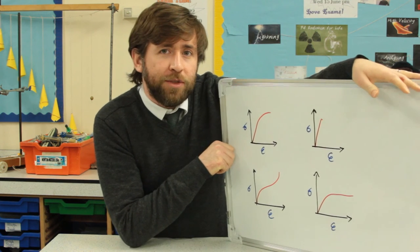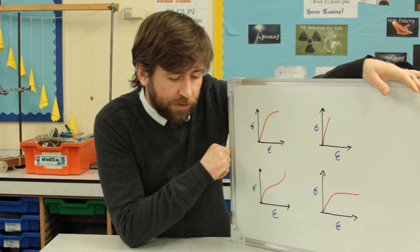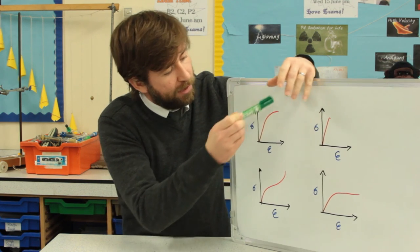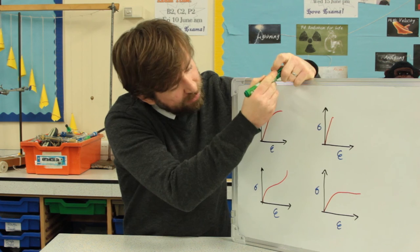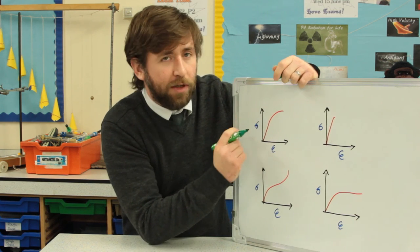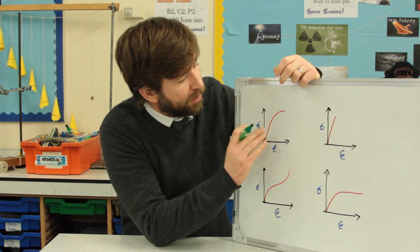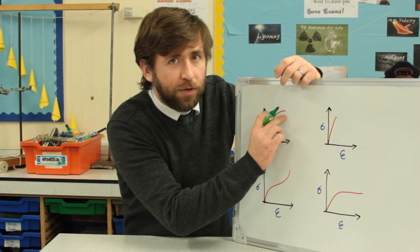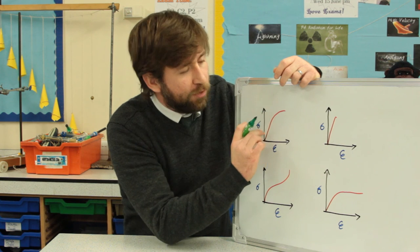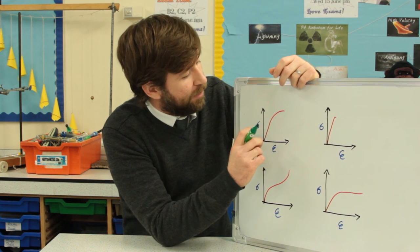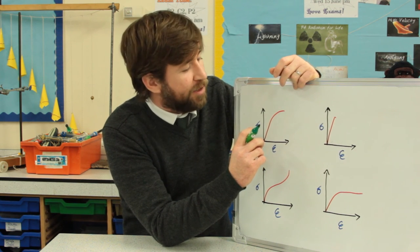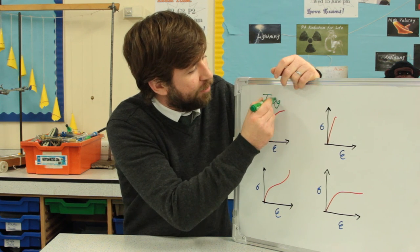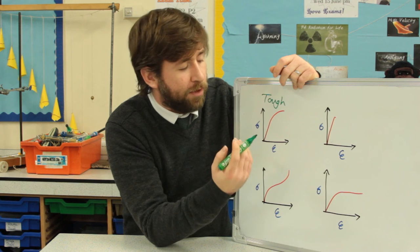So I promised you some graphs and how they're linked to different material properties then. This first one I've drawn is a material which is quite stiff. You can see it's quite a steep line. It's also quite tough. It does deform plastically to a certain region. So you can add extra force after its limit of proportionality. So we'll call this one our tough material. Notice I haven't used the word strong.